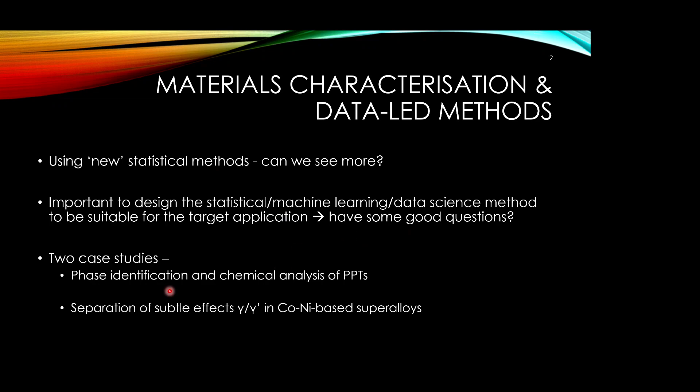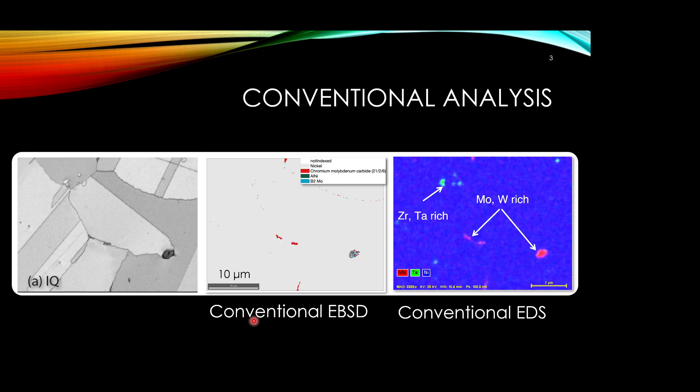Within this work I'm going to show some phase identification and chemical analysis of precipitates in polycrystal superalloys, and then how we can clearly show and analyze diffraction patterns from gamma and gamma prime cobalt superalloys. If we take conventional approaches doing simultaneous EDS and EBSD, we can see that the classification of different phases visible in the image quality map are not identified as the correct crystal structures, and the chemical signatures are rather fuzzy or blurry, making quantitative analysis quite difficult.